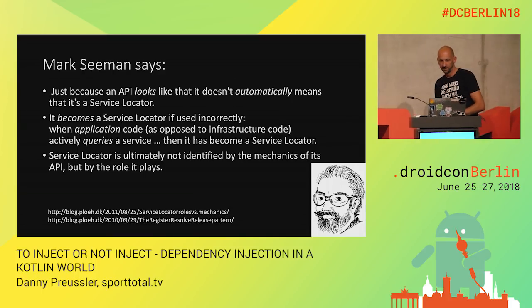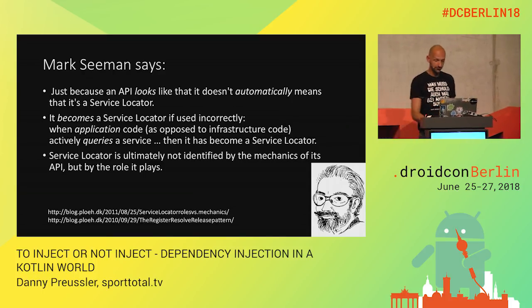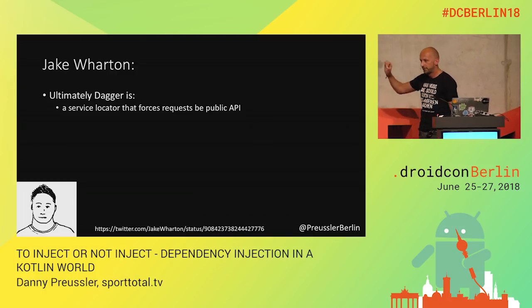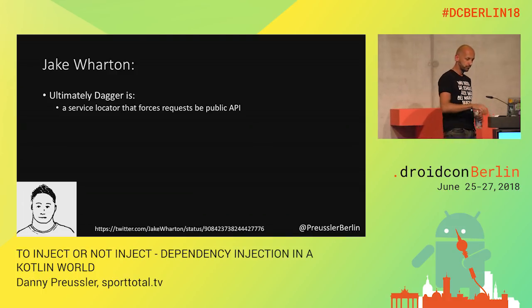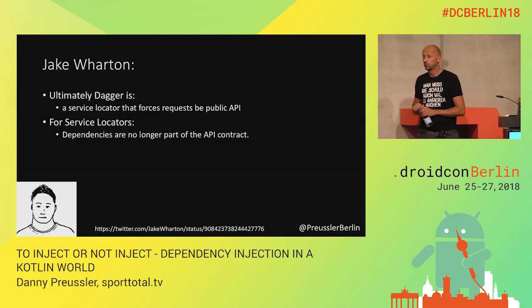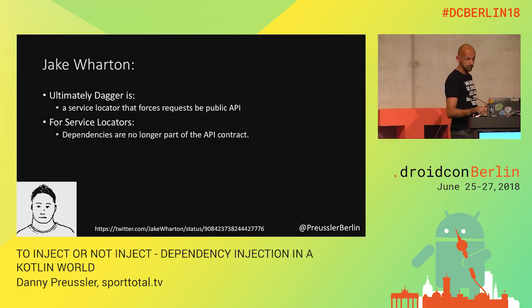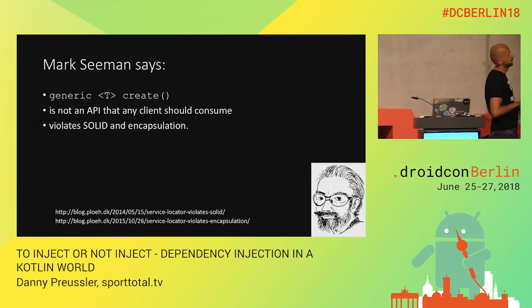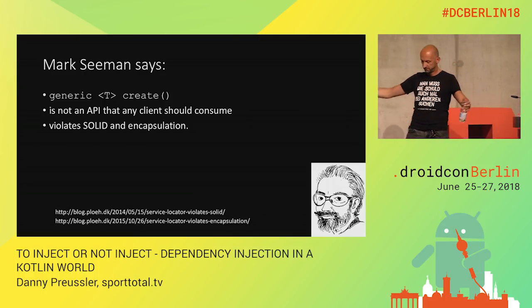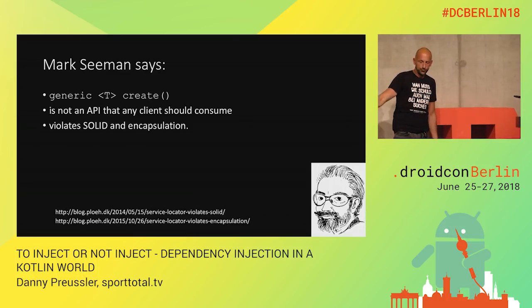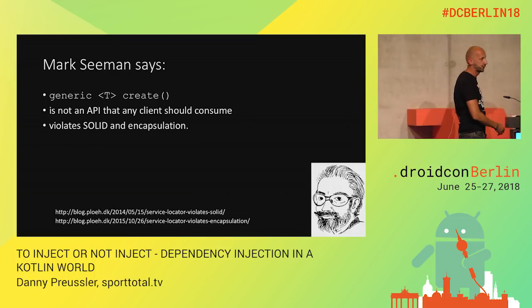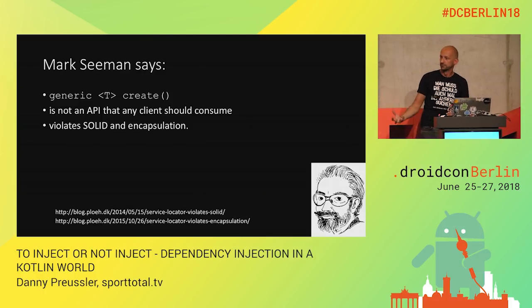So it's not about the mechanics — it's about the role that defines injector or locator. Back to Jake: he said it's a service locator, but one that forces requests to a public API. For Jake, the difference with service locators is that there the dependencies are no longer part of any API contract. This is exactly what Seeman meant — he gave an example of a very typical service locator API: a 'create' that is generic. Seeman said using this violates everything we know about object orientation — there's no contract there.